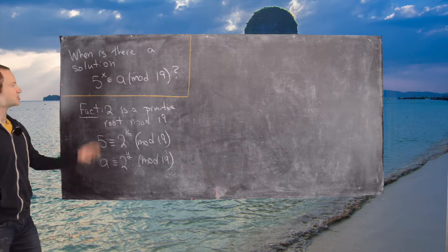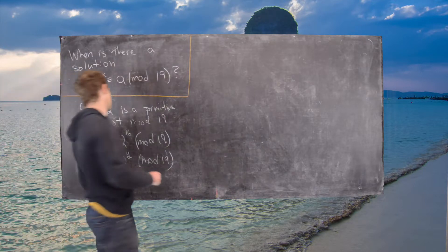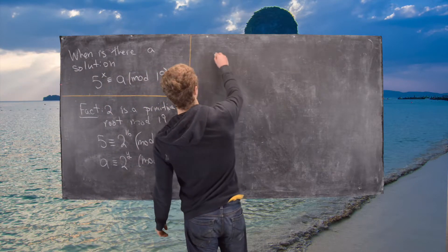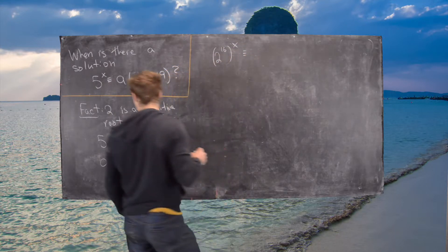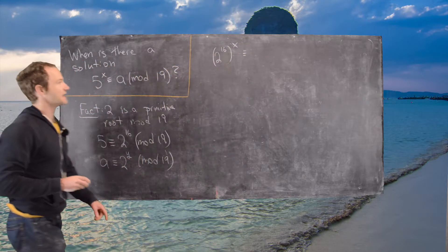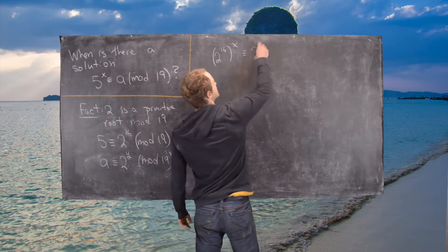So now let's see how this changes the following equivalence. We have 5 to the x, we can rewrite as 2 to the 16 to the x, and then we can write a as 2 to the y.